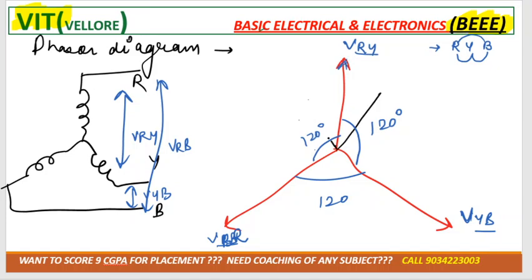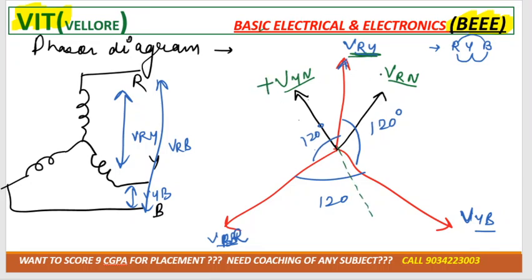We draw the phase voltages for the star. VRY is divided into two components: VYN and VRN. If VYN is positive extending in one direction, the opposite extension becomes minus VYN. Similarly VRN is another component. One component is always positive and one is always negative — extend the line to get both.